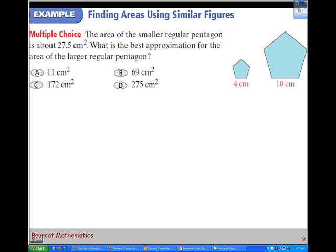You hit on all the key things right there in what you just said. We know the approximate area of the smaller one. We know that the smaller one has a side of 4 that corresponds to the larger one with a side of 10. We can look at that ratio. So let's set that ratio up. How do we start setting that ratio up?